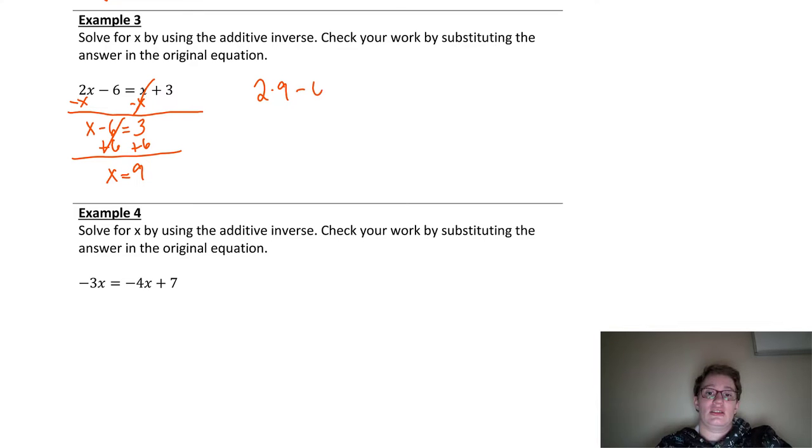2 times 9 minus 6 is 18 minus 6, which is 12. Does that equal 9 plus 3, which is so much easier to do, 12? Yes, it does equal. So, we got it right.